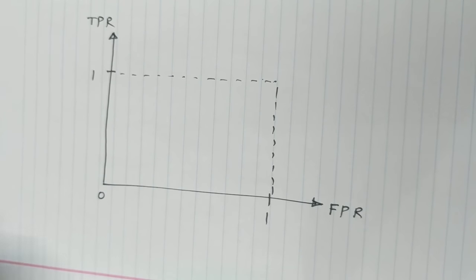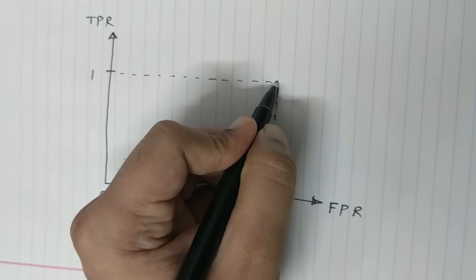Now, let's start plotting. At threshold 0, I had a TPR and an FPR of 1 and 1. So this is one point.